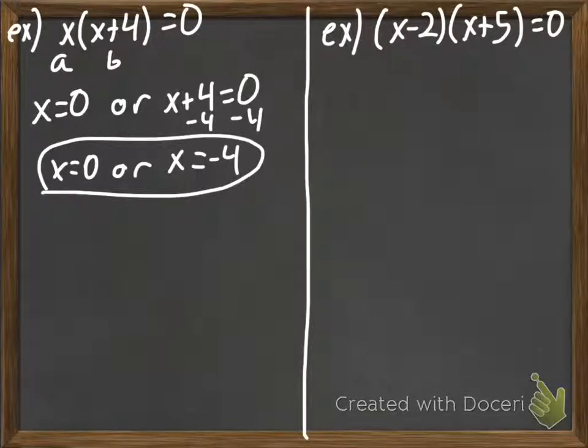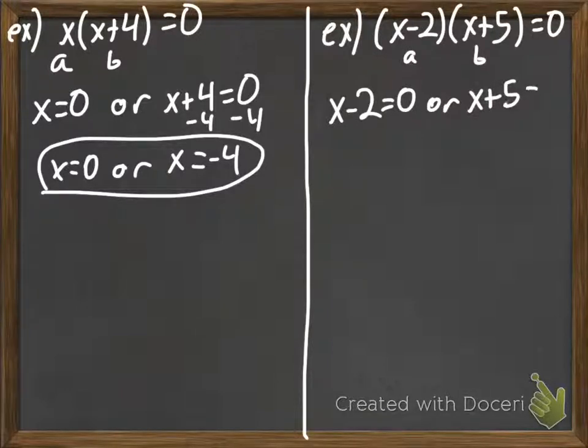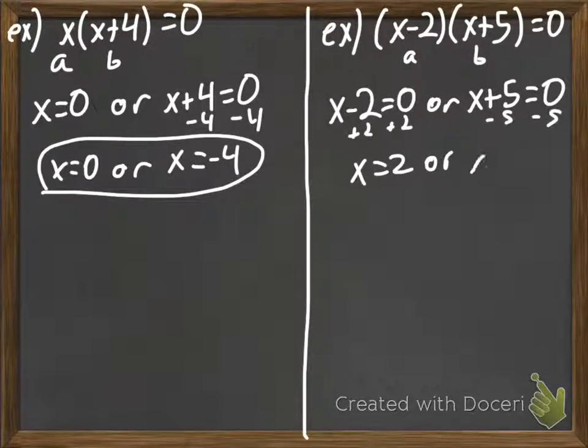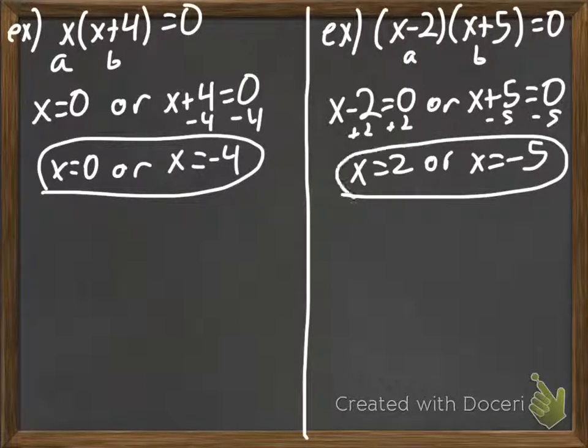So, it's time to solve the second one. This is a, and this is b. I'm going to say that the a part equals 0, or the b part equals 0. And then we solve. So, we get that x equals 2, or x equals negative 5.